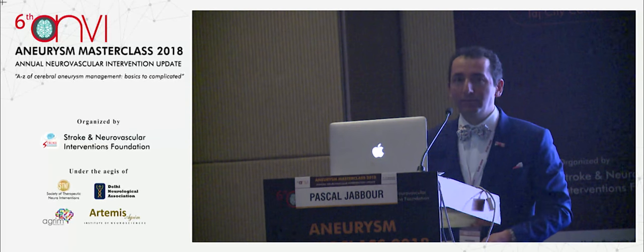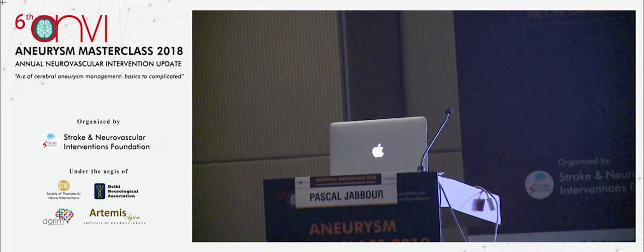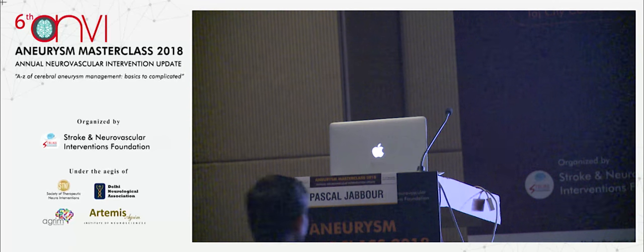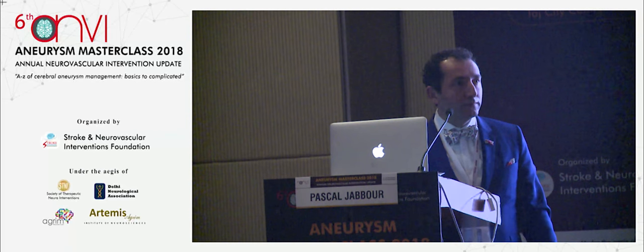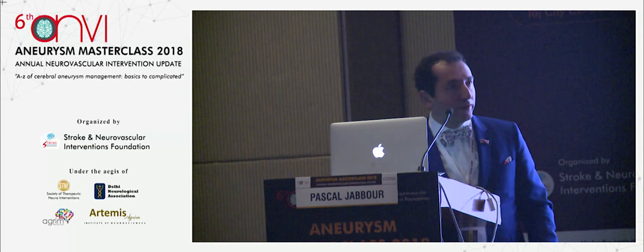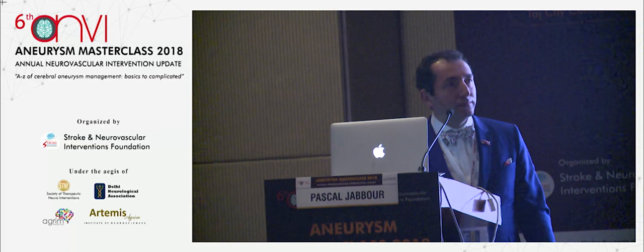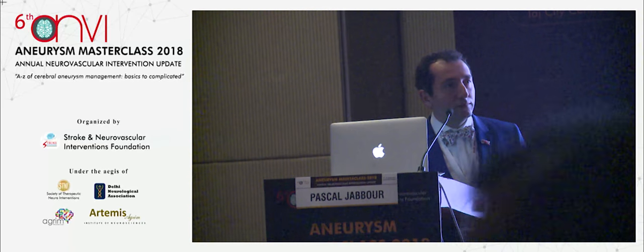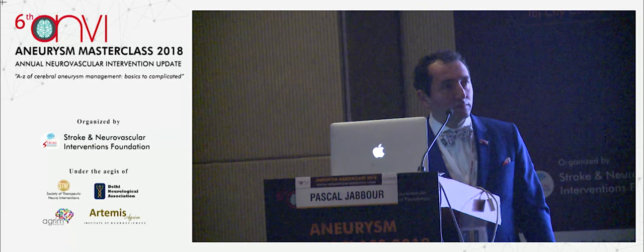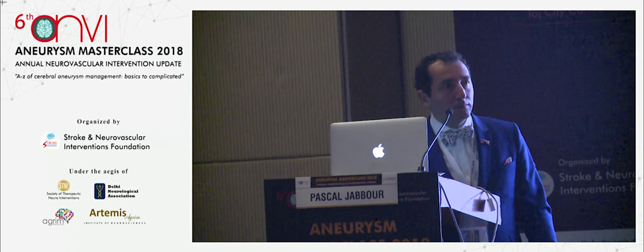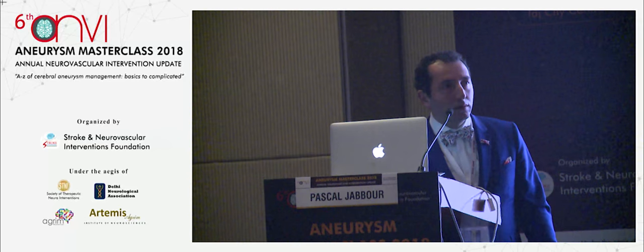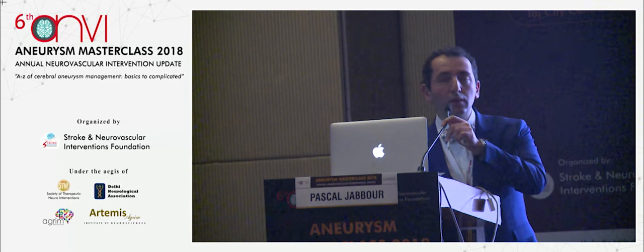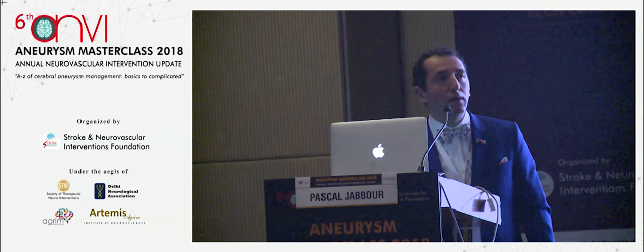Any questions? In Europe we are very lucky — we have Surpass, P64. I've used Surpass and FRED in trials, but they are not approved yet. What do you think is the true complication rate of flow diverters? At meetings it seems much higher than published literature. If we talk about any complication including asymptomatic DWI hits on MRI, the rate is close to 10–15%. For serious adverse events, 5–6% is a reasonable number. That is for the anterior circulation.